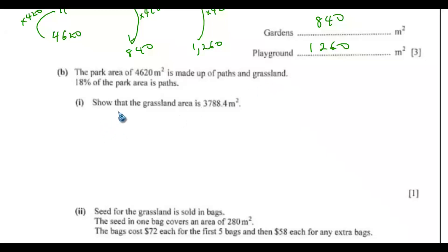So that means we want to find 82% of 4620. So you have 82 out of 100 multiplied by 4620. So if we do this, you have 3788.4 meters squared.